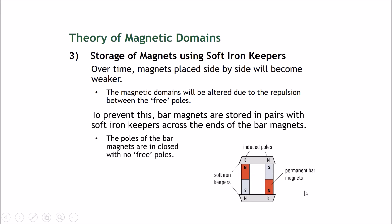As an example, two magnets are placed in opposite directions — one north-south, the other south-north — and iron bars are placed on the top and bottom. This causes the iron bars to become induced magnets, with induced south and north poles at the appropriate ends. With no free poles and the magnets enclosed this way, the two permanent bar magnets are able to keep their magnetism for a much longer time.